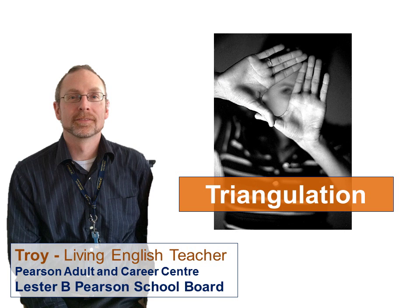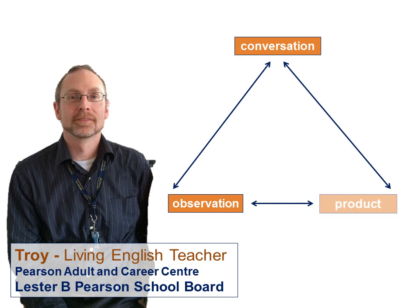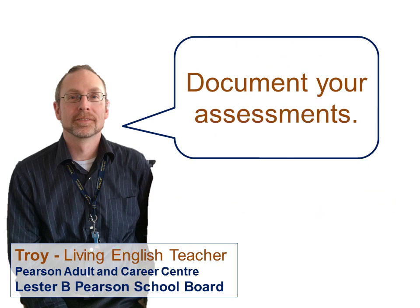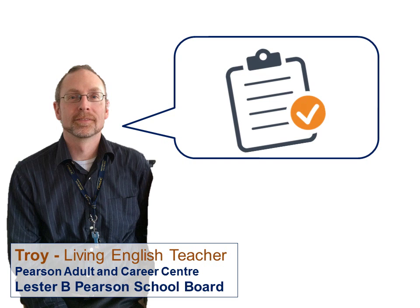We've talked about doing triangulation — three different areas where you can look at what a student knows: if they produce a product, when you're having conversations with the student, or if you observe them doing something. These are things that we do every day in class. You just need to look at them a little more closely — am I documenting something? Am I going to make a quick checklist out of it?